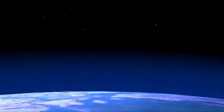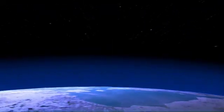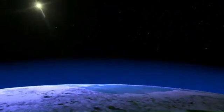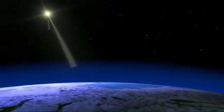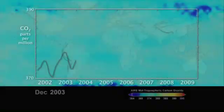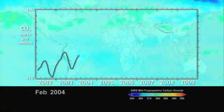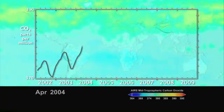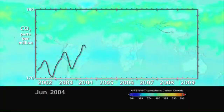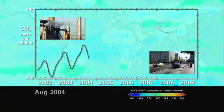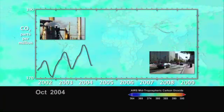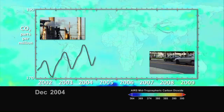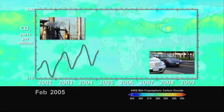Carbon dioxide is a naturally occurring gas in our atmosphere, and monitoring it is like watching our planet breathe. This animation shows the seasonal cycle of carbon dioxide and the increase of carbon dioxide every year due to human activity.